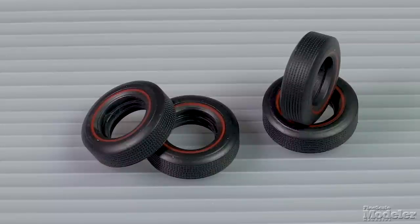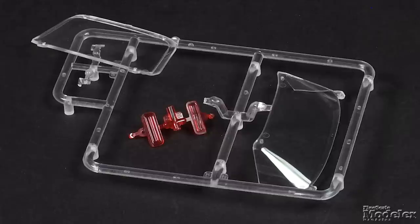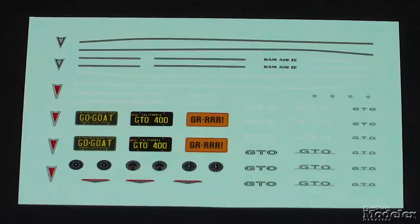Four red line vinyl tires are included and the clear parts provide a separate windshield and backlight as well as front turn signals and taillights. Decals supply Pontiac badges, GTO logos in black and white, dials for the instrument cluster, pinstripes and a choice of license plates. This kit looks like it should be a quick build and a must-have for GTO fans.